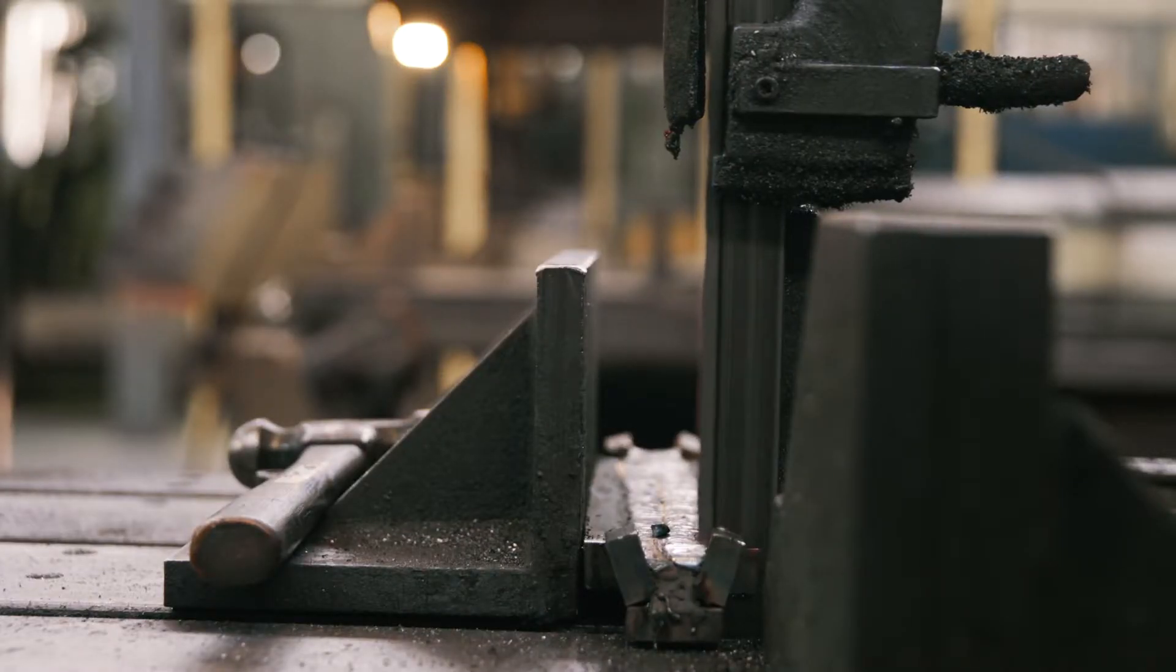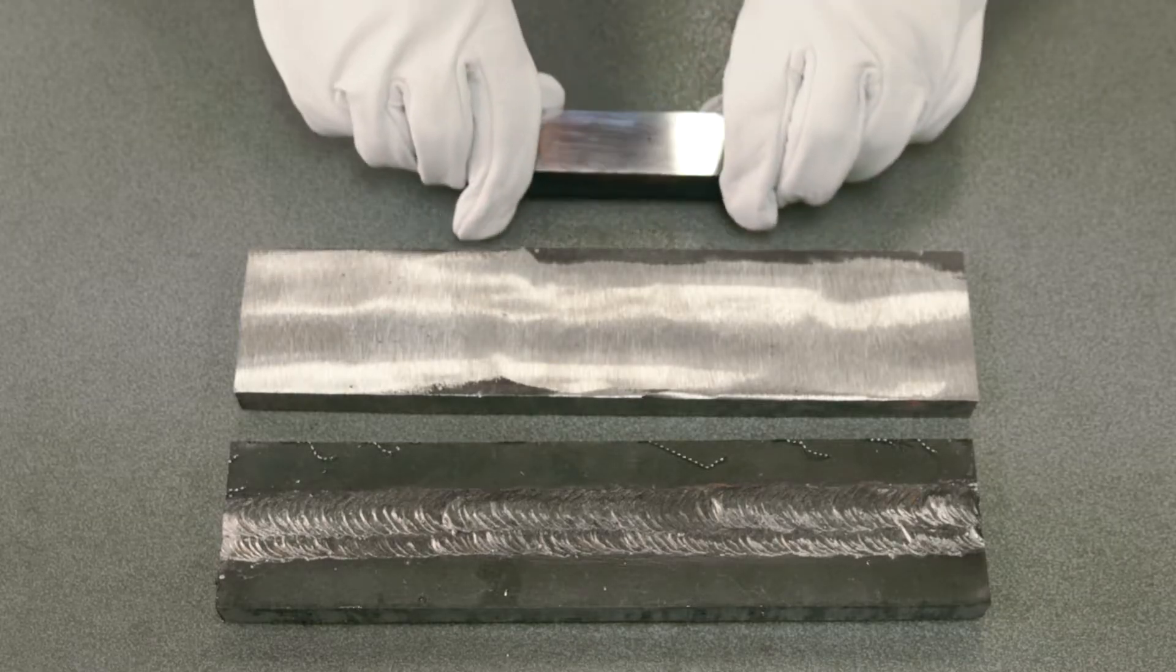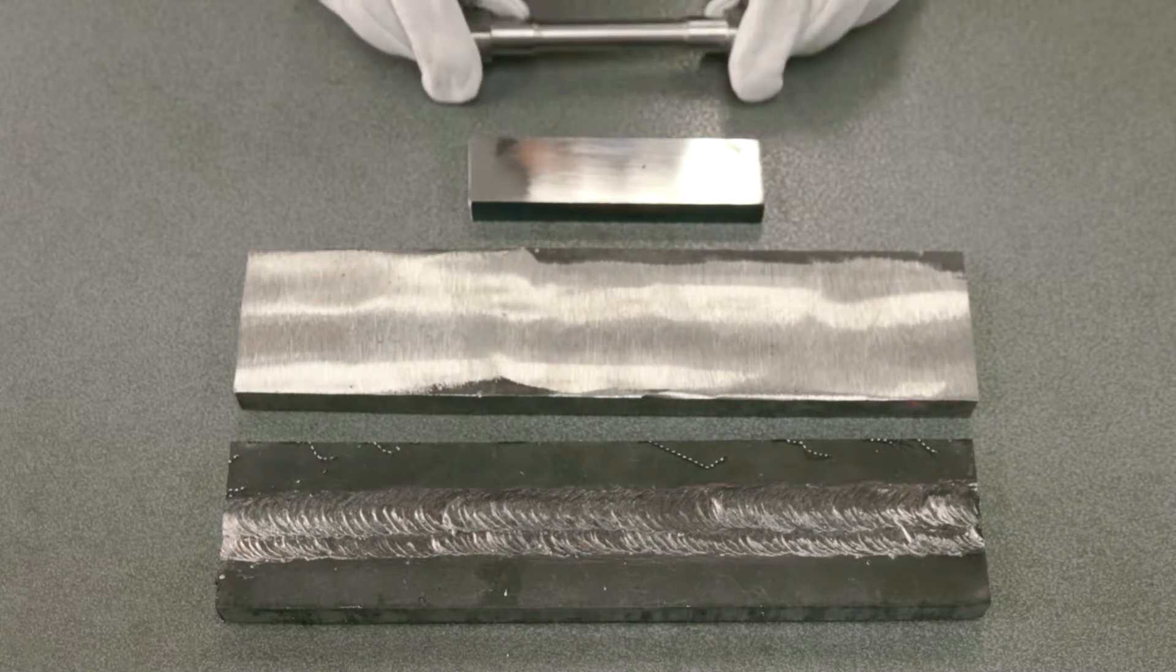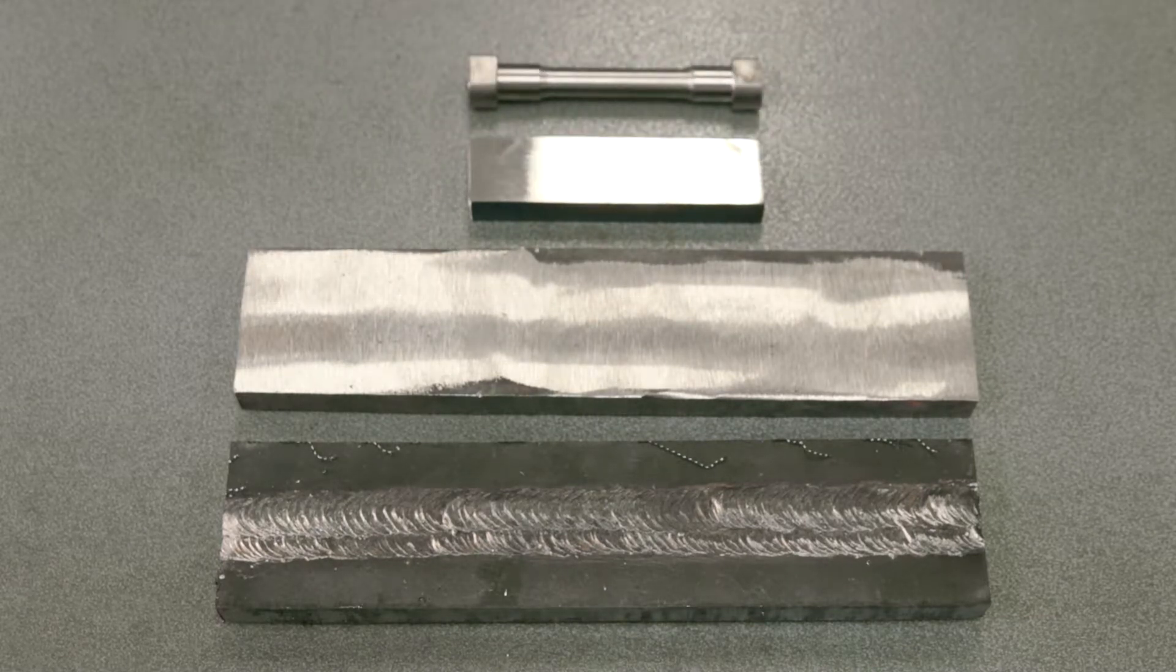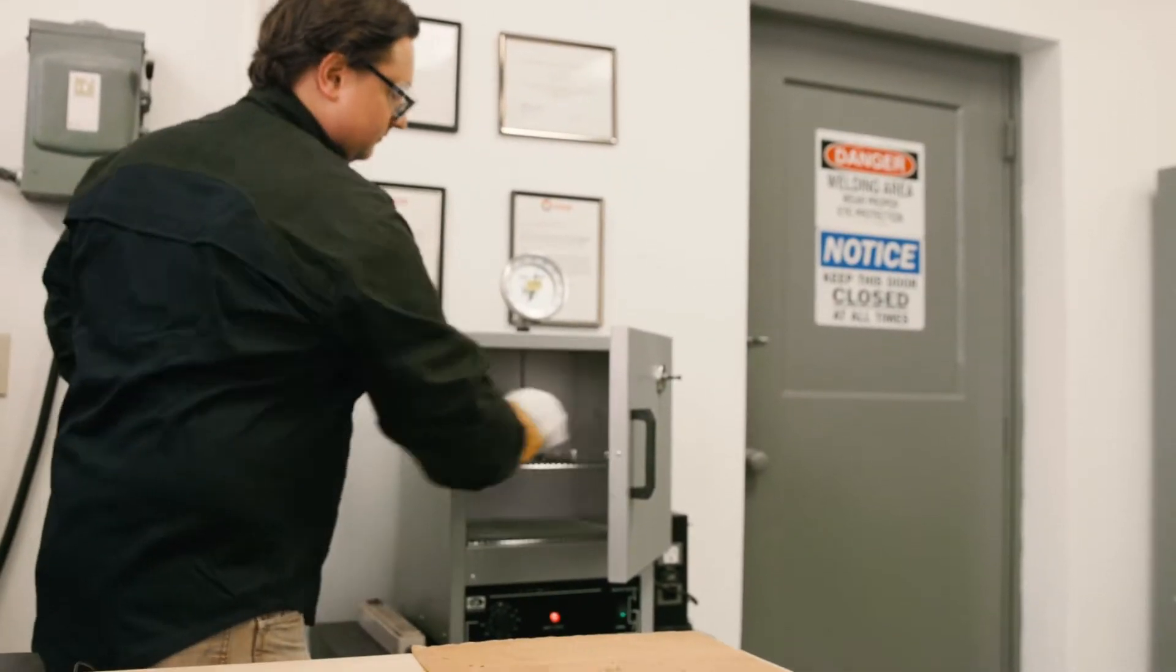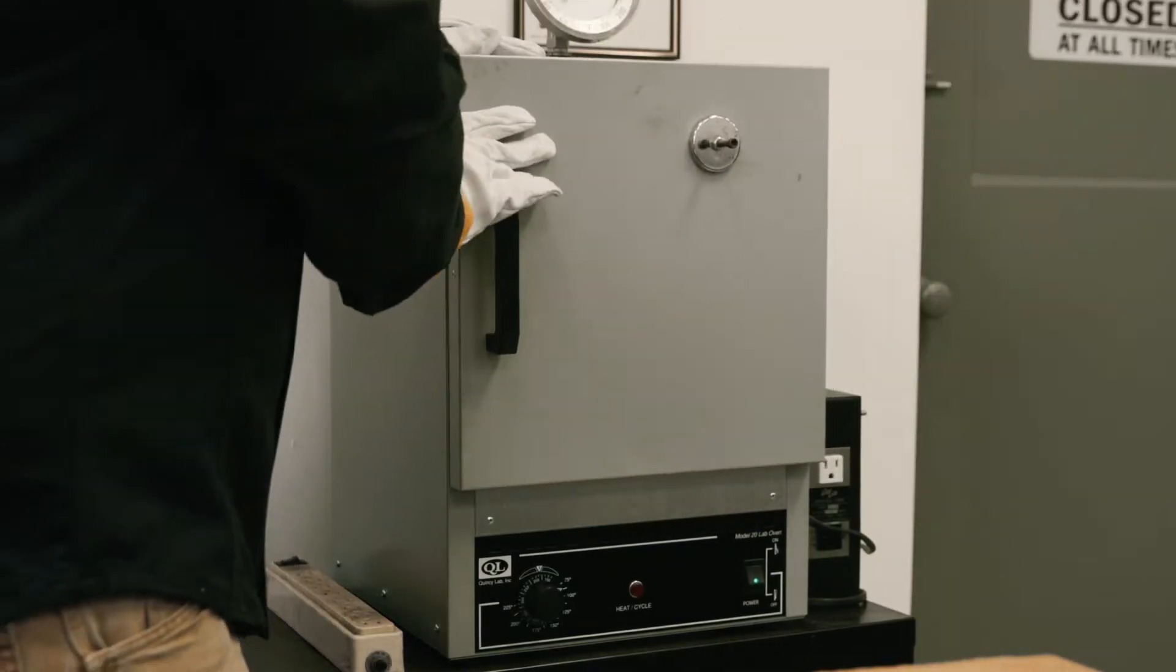A band saw is used to extract the sample blank. Some filler metal classifications or customer specifications require testing to be performed in the post-weld heat-treated or post-weld stress-relieved condition. Before machining, the sample blanks are put into an oven for thermal treatment at the specified temperature for the specified amount of time.